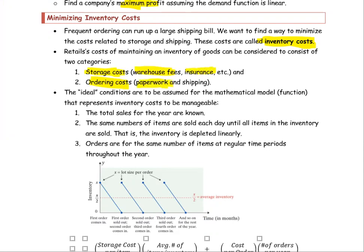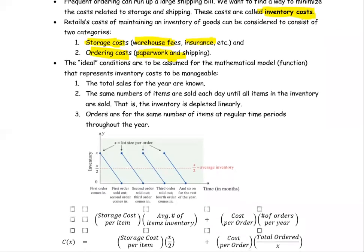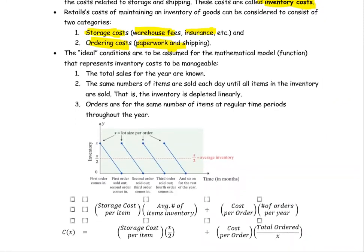The ordering cost is based on when you order the product. These two portions combine to be the inventory cost - that's the most critical part of the problem. If you set up the problem wrong or get the wrong equation, even though you know how to find a derivative, you will not get the right answer. The ideal condition for inventory cost: total sales for the year should be known, and the same number of items are sold each day until all items are sold - keeping it in the ideal situation with no change and no variability.